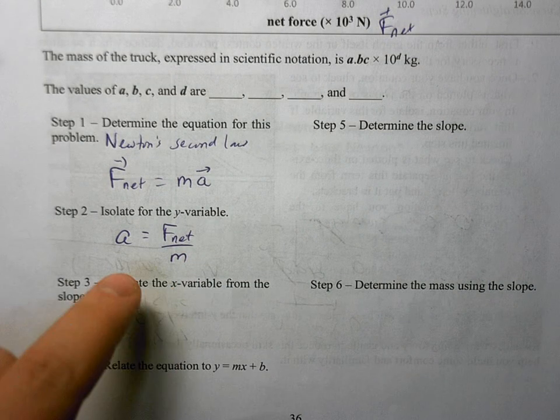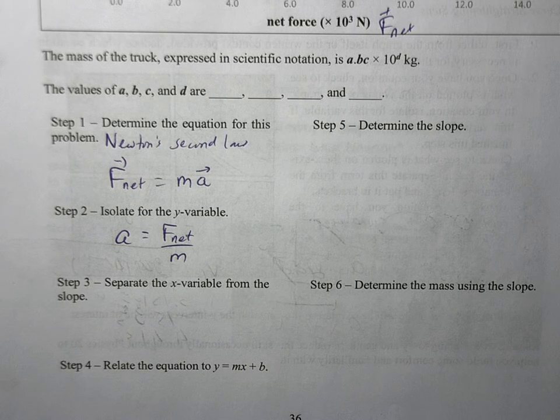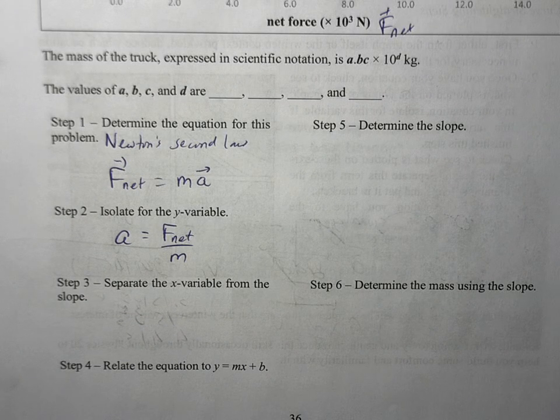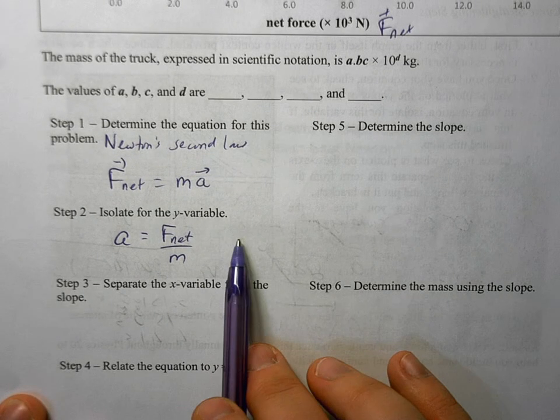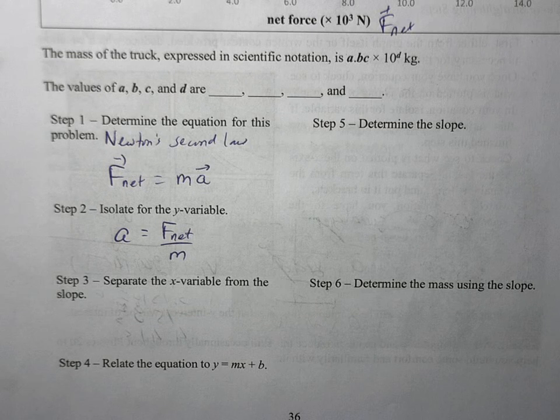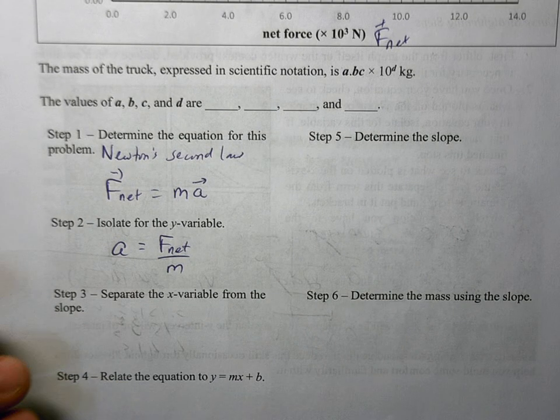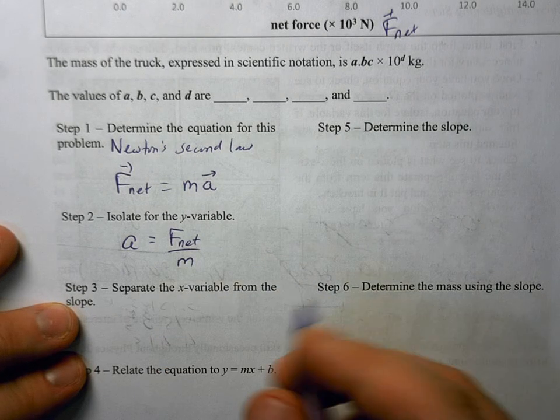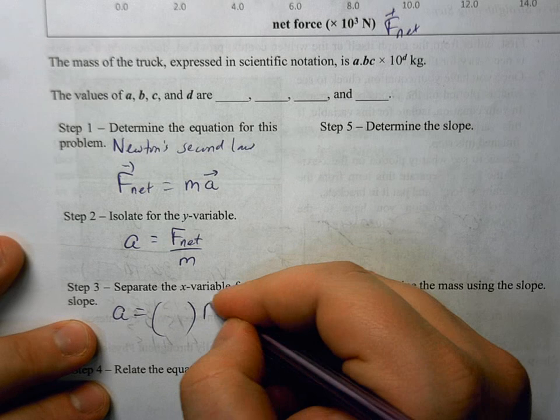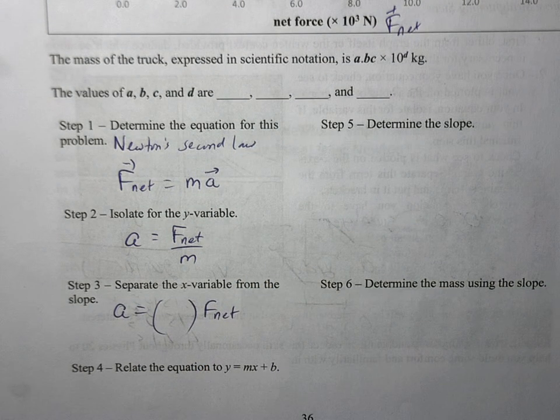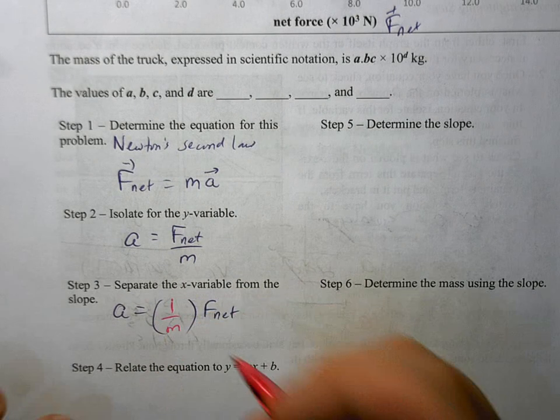So now we have y equals something. We're trying to work our way to y equals mx plus b. We'd like to separate the x variable from the slope because we know y equals mx. We don't have a plus b here, so our y-intercept in theory is going to be zero. We want to separate the x variable or F_net from everything else. So instead of writing a equals F_net over m, I'm going to write a equals, and then I'm going to have my F_net separated here. This is still my x but separated from that. I'm going to have this one over m term.